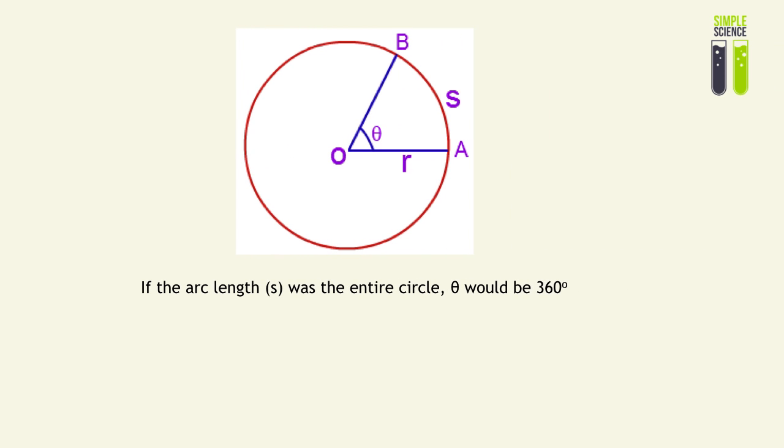Now let's look at how we can calculate what a radian is. Theta would be 360 degrees if we were to take the arc length as the entire circle. The whole circle would result in angular displacement of 360 degrees. We know that theta equals arc length divided by radius. And in this case, arc length is equal to the circumference, and the circumference is 2πr.